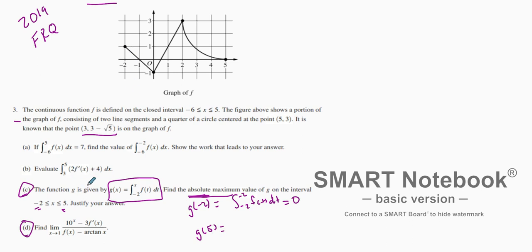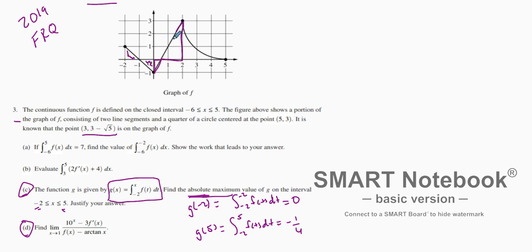Now for G of 5, we found some of this in the previous problem. We're integrating from negative 2 to 5 of f(t) dt and finding this area. We know those portions canceled out, leaving us with negative one-fourth. Then we add this next area, which is going to be one-half base times height — the base is three halves.